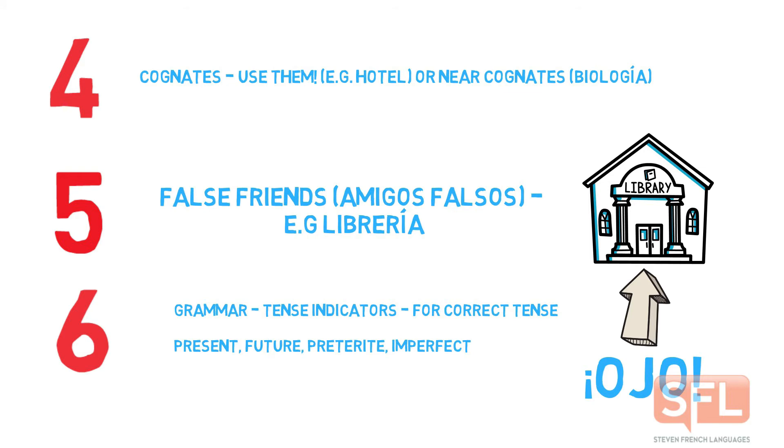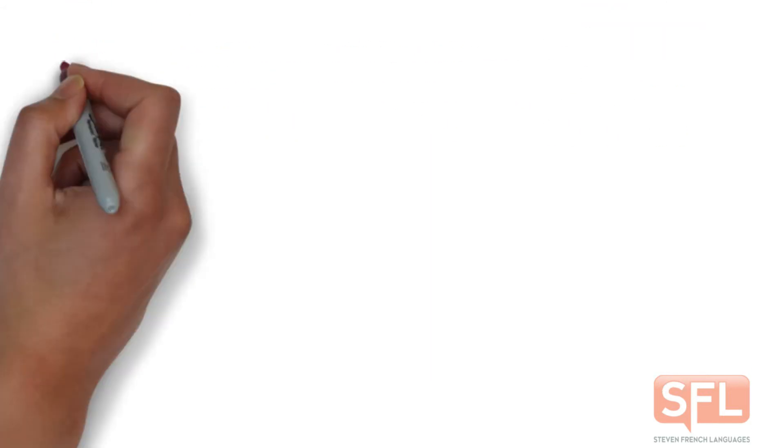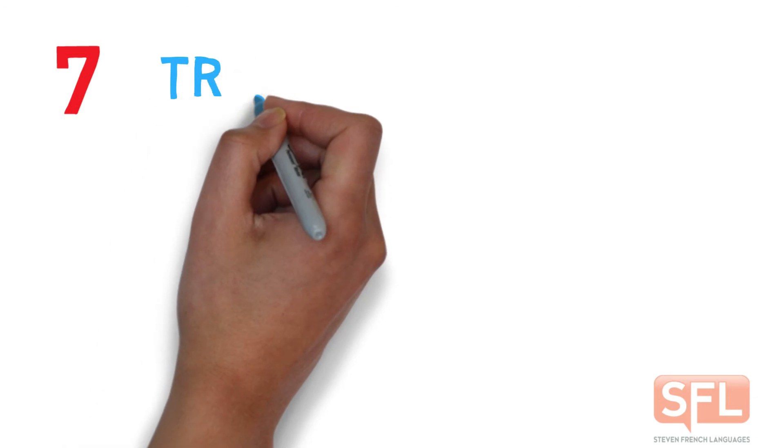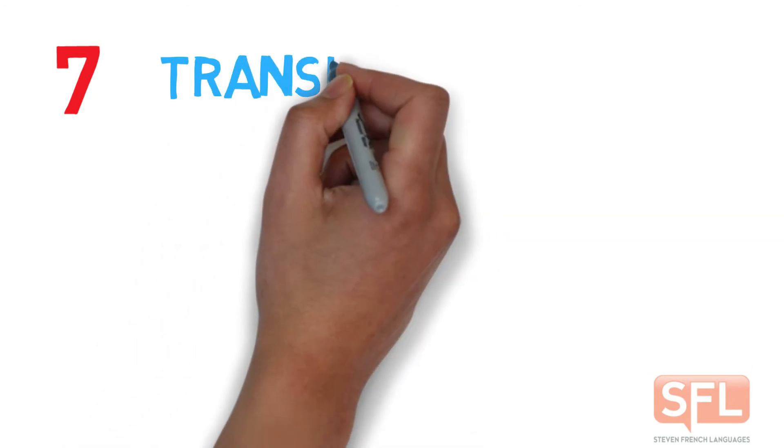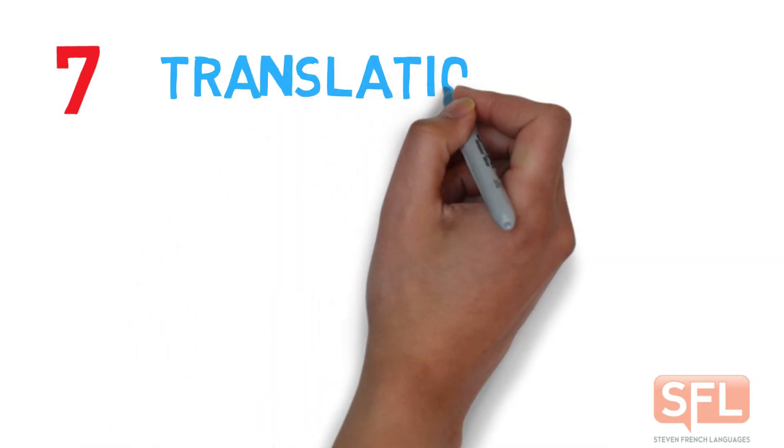On the grammar side, tense indicators are important. Make sure you're aware of the present, the future, the preterite, and the imperfect, because that will add accuracy — total accuracy — to your translation.